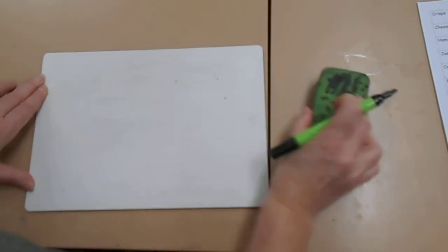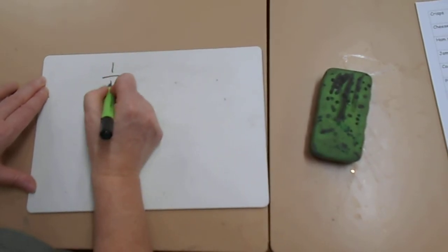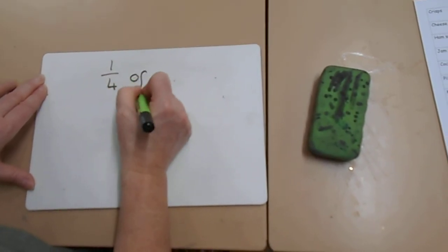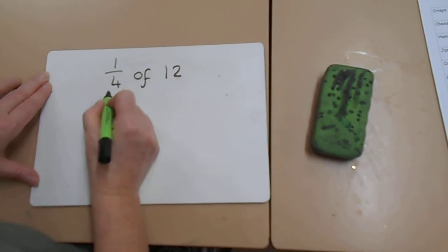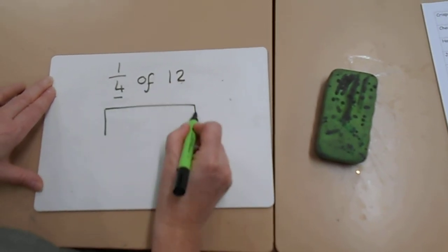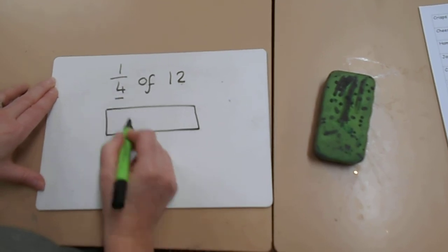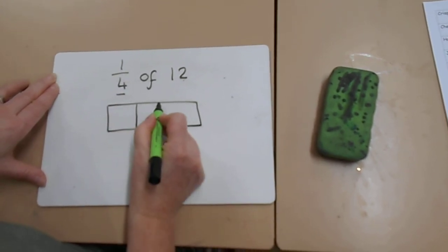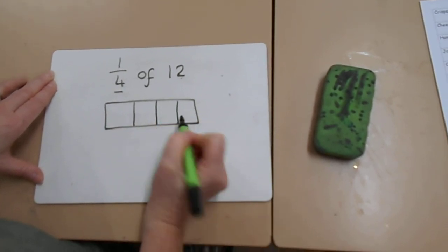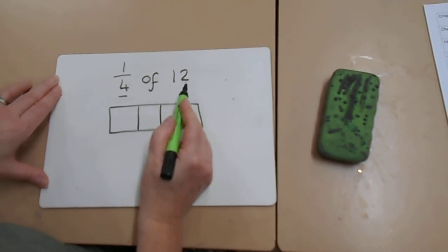And then finally, we're going to look at quarters. A quarter of 12. So remember, the bottom number tells us how many to split our bar into. So this time we're splitting our bar into 4 sections. And then we need to share 12 out equally.